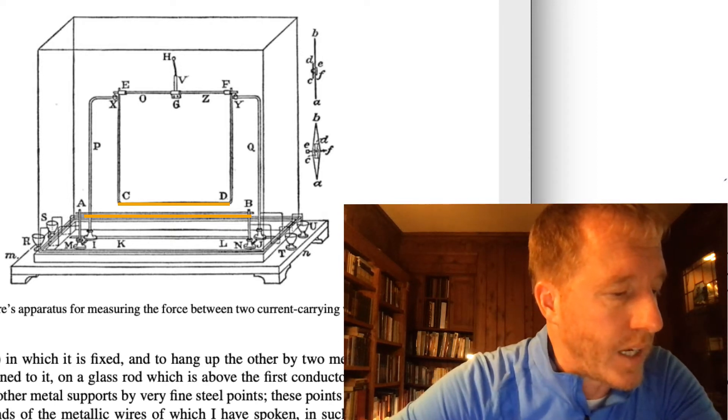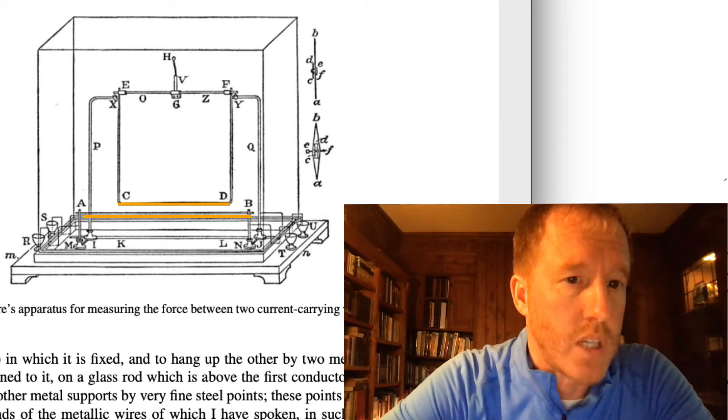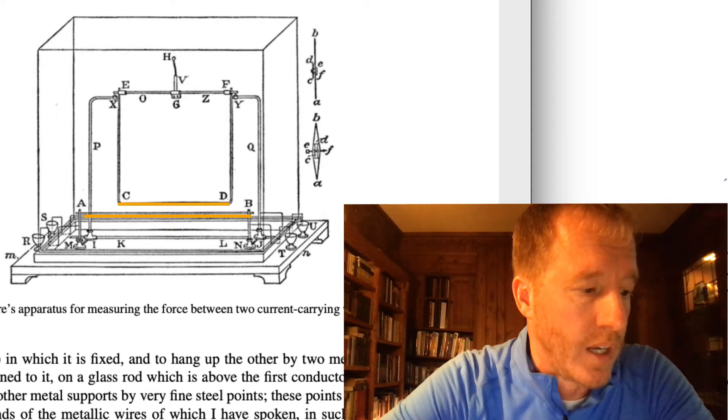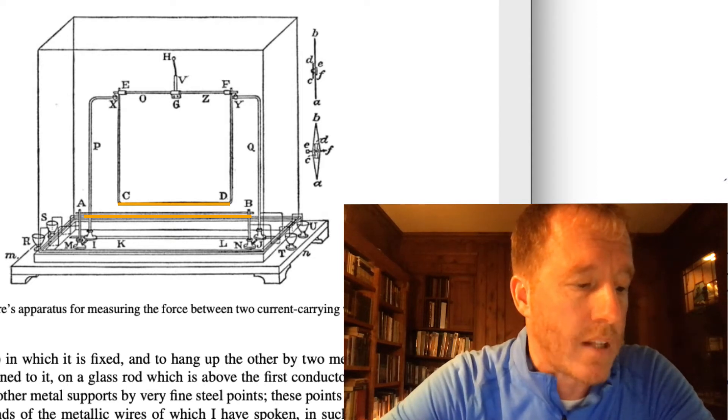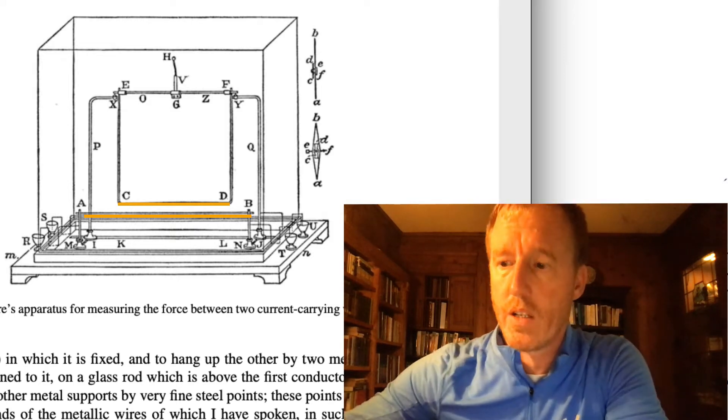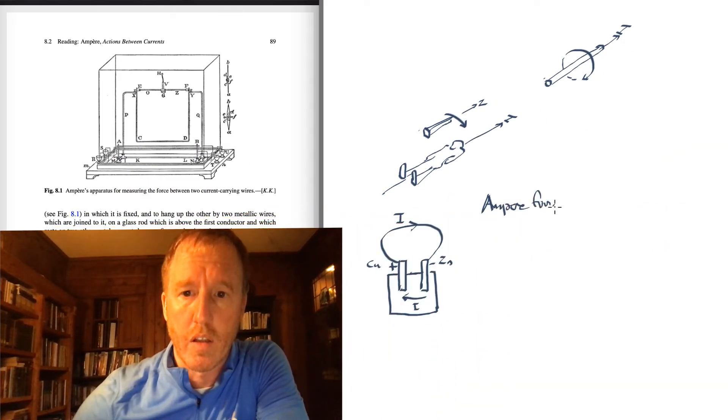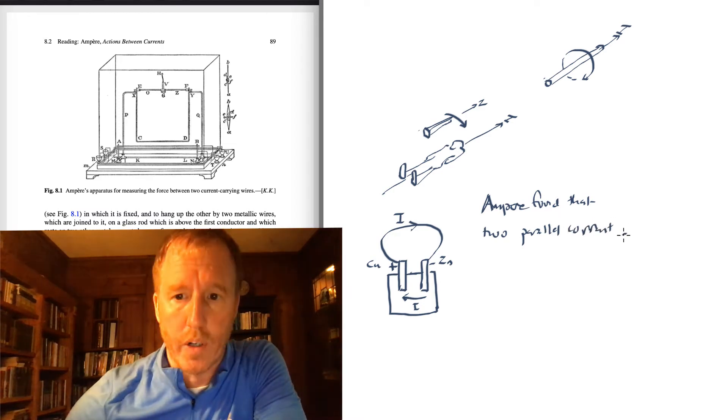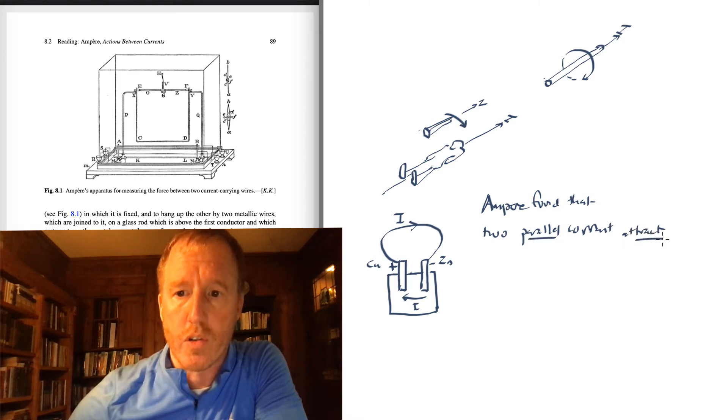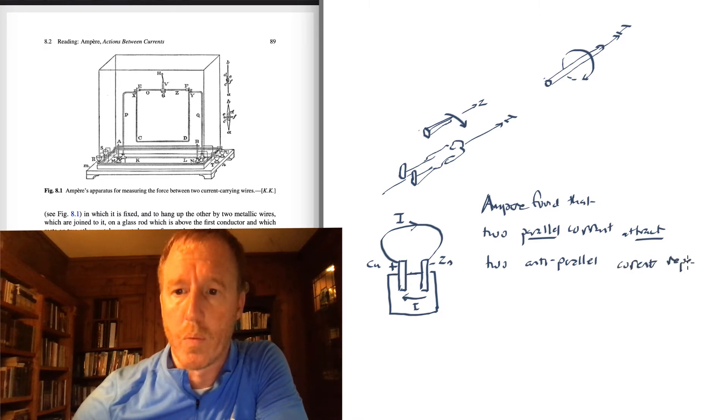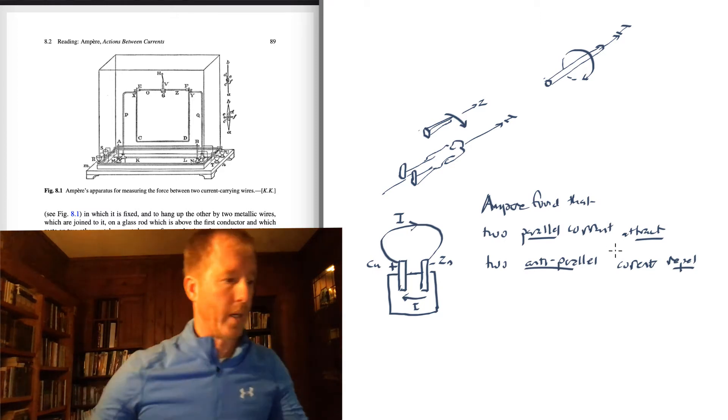That is, they attract one another if the currents are flowing in the same direction. That is, the wires, the currents are parallel to one another. And they repel one another if the currents are opposite or anti-parallel to one another. So let's just write that down. He finds that two parallel currents attract one another. So parallel currents attract one another. And two anti-parallel currents repel one another. And this is exactly what we are going to be doing in lab this week.